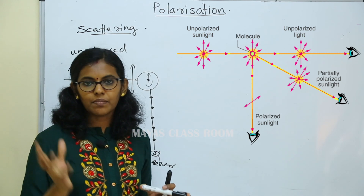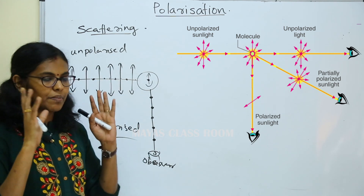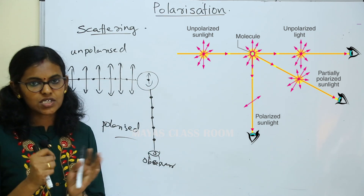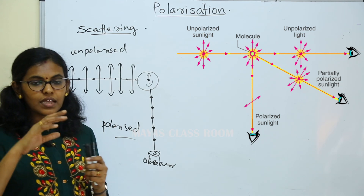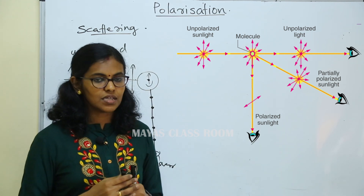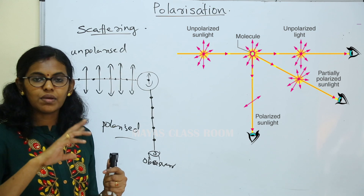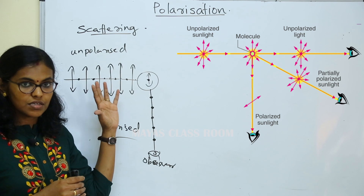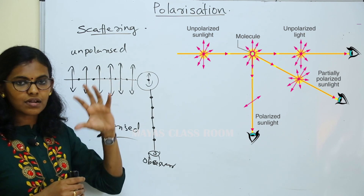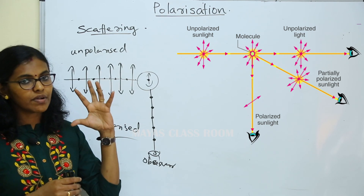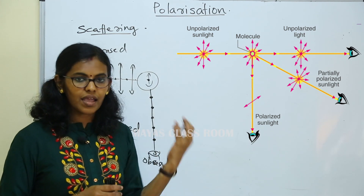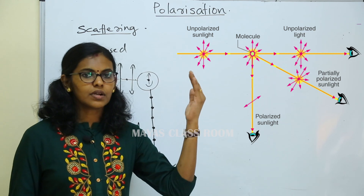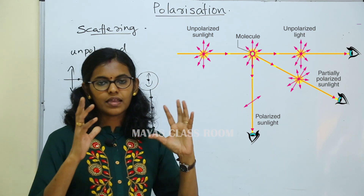There are many particles in the atmosphere. There are electric and magnetic vibrations. We have a maximum intensity and minimum intensity. This is the electric vibration; particles are already electrons. The vibration and energy are absorbed.